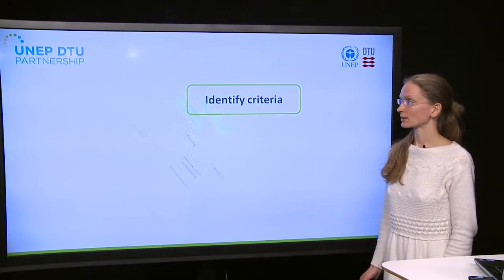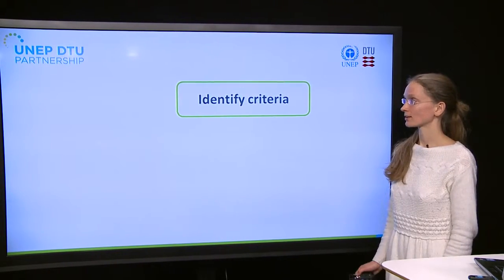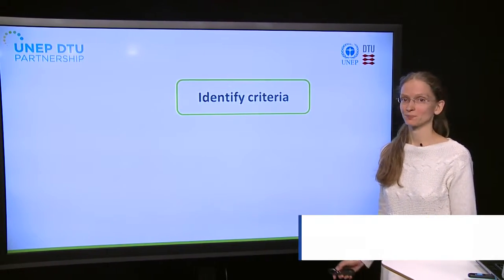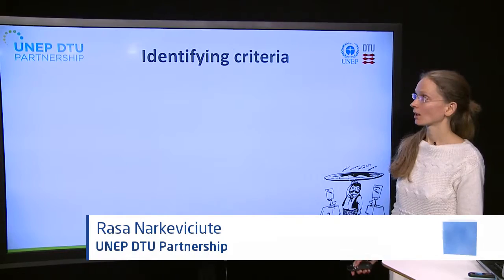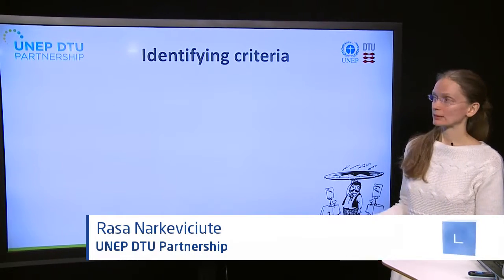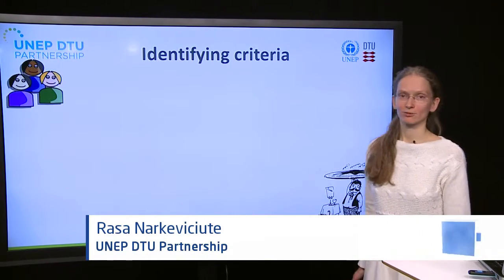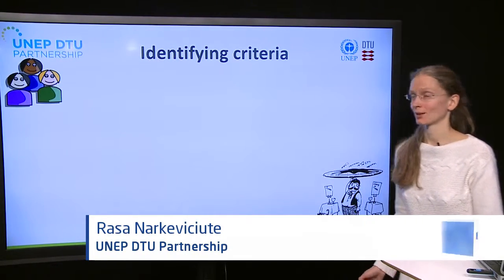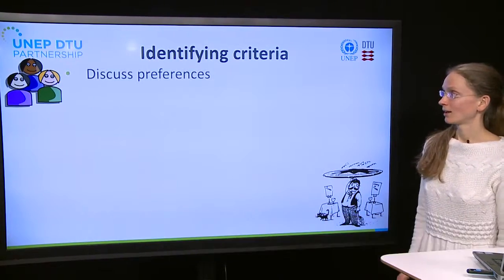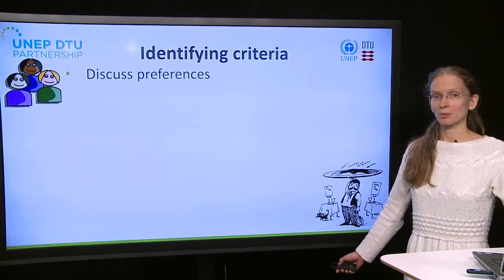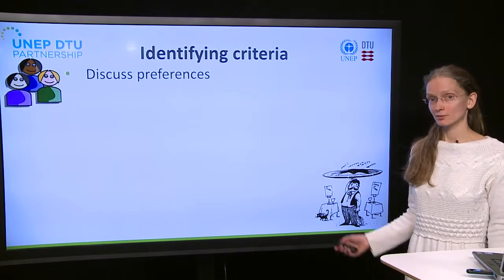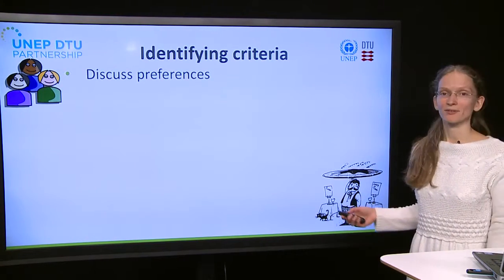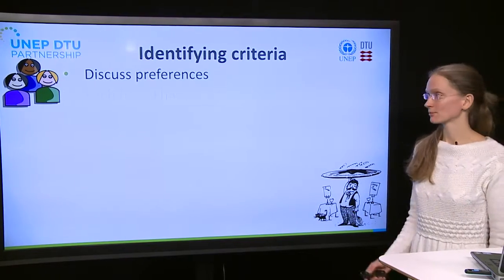In the next section we will discuss the identification of assessment criteria. As before, we will start with the three old friends who are going out to eat. How do they decide which place is better? They have to discuss their preferences in some way.